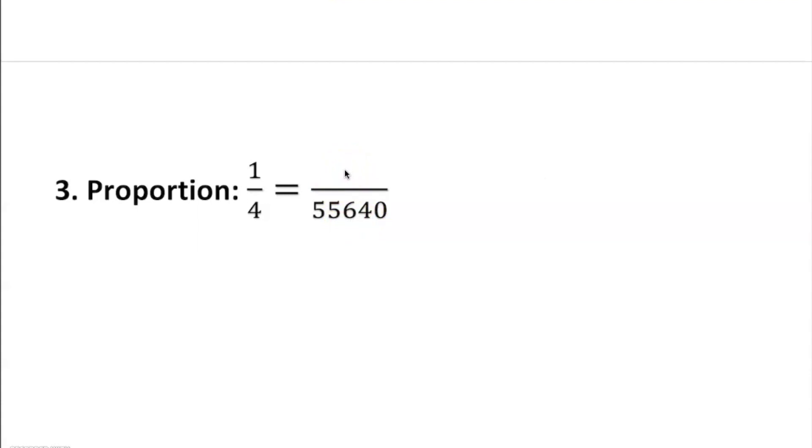Once we have this, we can do cross multiplication. Get the variable on the left - that's always better. So if we do cross multiplication, four times x is 4x, and one times 55,640 is 55,640.